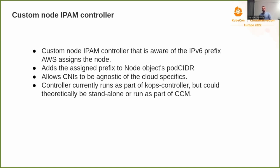The really cool thing about this is that CNIs are completely unaware of what's going on. All the cloud-specific stuff with prefixes is hidden behind that controller. That means any CNI can support global routing with IPv6 out of the box without any changes, as long as it's configured to look at the node object's pod CIDR. The controller currently runs as part of the ex-controller, but theoretically it could be a tiny standalone or run as part of the cloud controller manager.